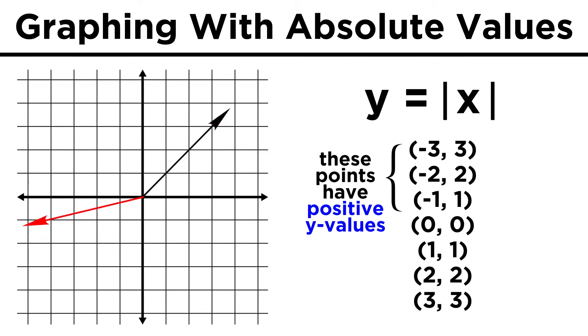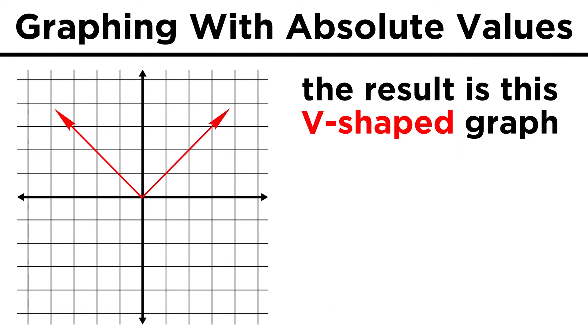That means that everything to the left of the y axis, or all the negative inputs for x, will be reflected across the x axis, so that we get the positive versions of all these y values, resulting in this V-shaped graph rather than the line we had before.